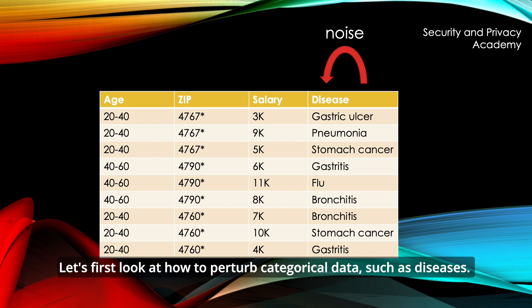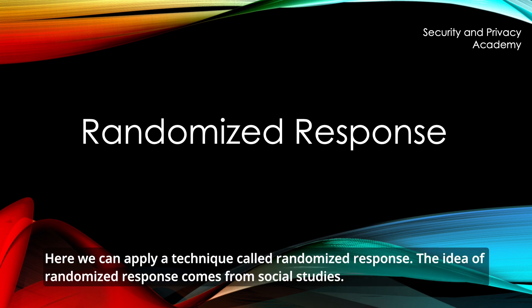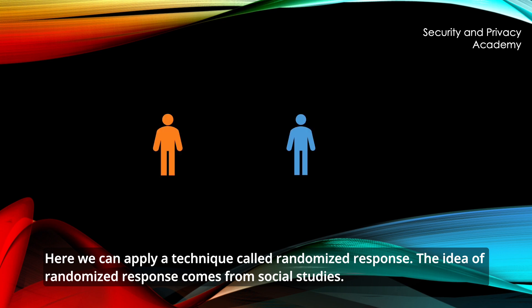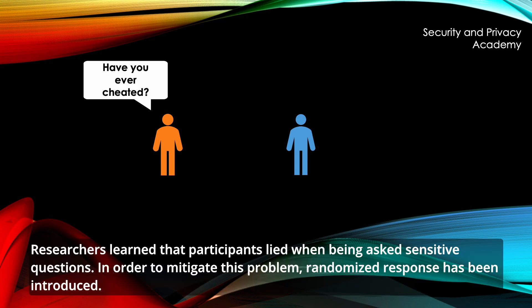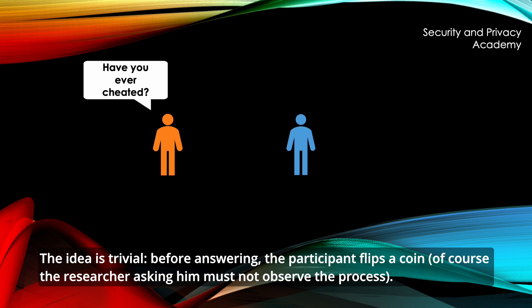Let's look at how to perturb categorical data, such as diseases. Here we can apply a technique called randomized response. The idea of randomized response comes from social studies, where researchers learned that participants lied when asked sensitive questions. In order to mitigate this problem, randomized response was introduced. The idea is simple: before answering, the participant flips a coin.